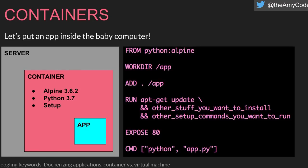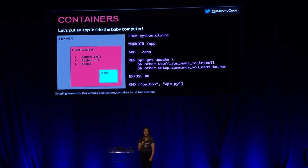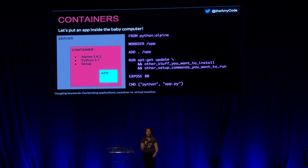Now we're going to pretend I'm an application developer. The main idea is that I, as an infrastructure software engineer, do not need to trust you as a developer. So we want to build failure into our infrastructure orchestrator. What we're doing is putting an application inside a baby computer.